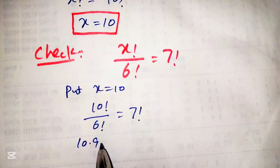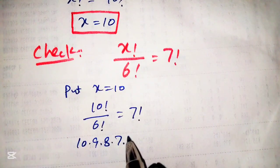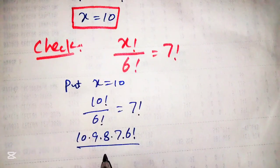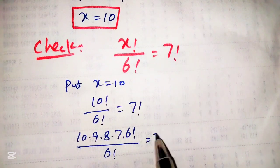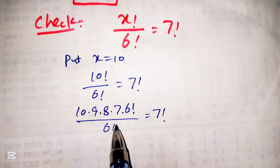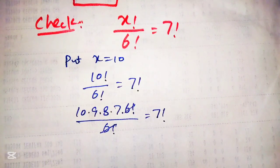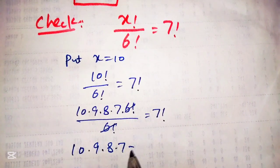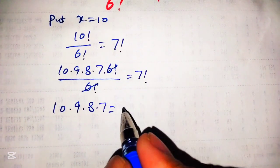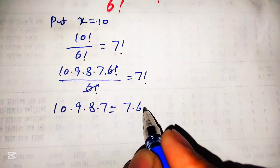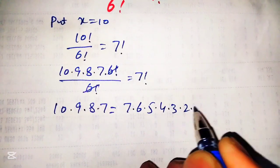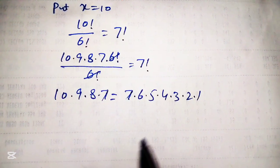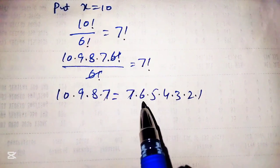To simplify this, we can write 10 factorial as 10 into 9 into 8 into 7 into 6 factorial, and then divide by 6 factorial. This 6 factorial cancels out with the 6 factorial in the denominator. We then get 10 into 9 into 8 into 7, which must equal 7 factorial, written as 7 into 6 into 5 into 4 into 3 into 2 into 1. Now the 7 cancels out from both sides.